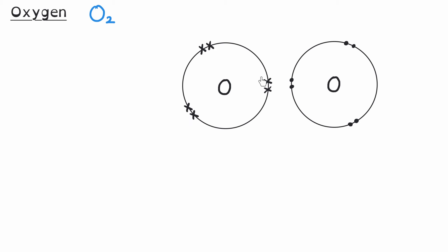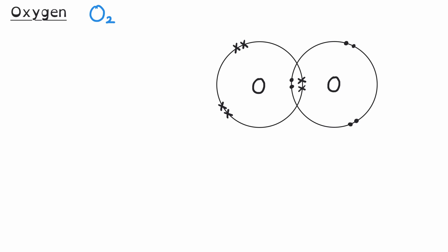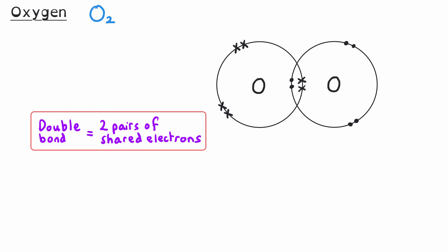Oxygen is in group six of the periodic table, so it has six electrons in its outer shell. Since that shell can hold eight, the oxygen atoms need to share two electrons each. When those shells overlap, there are four shared electrons forming two pairs. This creates what is called a double covalent bond — previously, a single pair of electrons was a single covalent bond, but here we have a double bond.